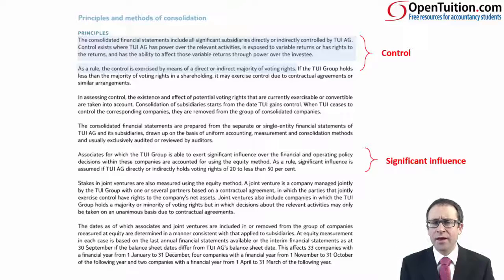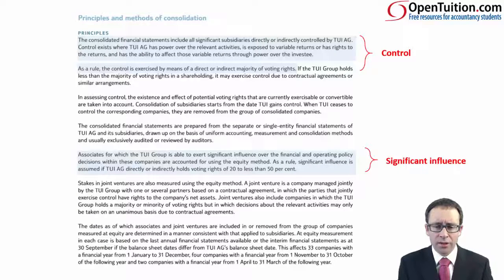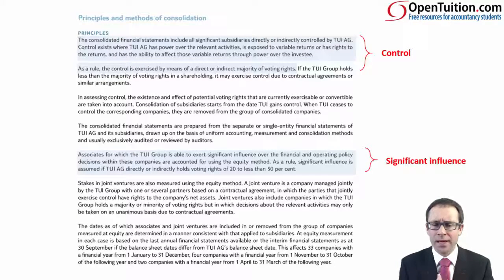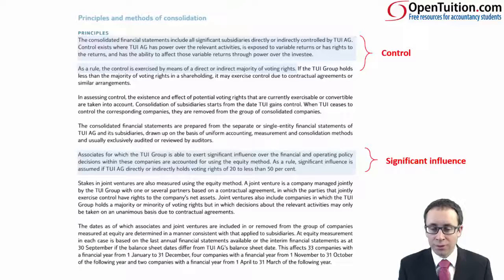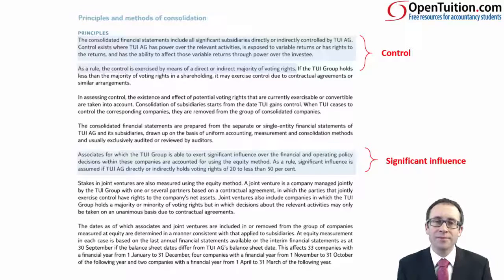Moving further down, in the fifth paragraph it brings in significant influence. It states: 'Associates for which the TUI Group is able to exert significant influence over the financial and operating policy are accounted for using the equity method.' So it tells us the accounting treatment where we have significant influence. And it then defines it: as a rule, significant influence is assumed if TUI directly or indirectly holds voting rights of 20% to less than 50%.